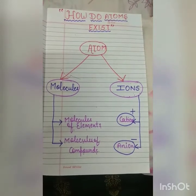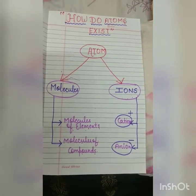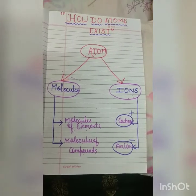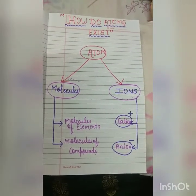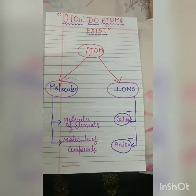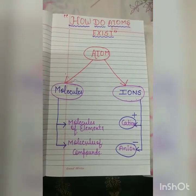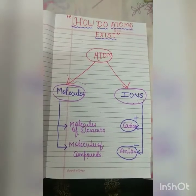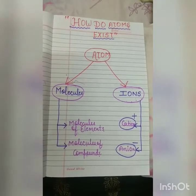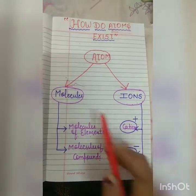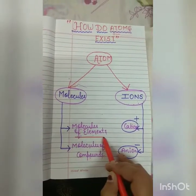When we talk about molecules, we know that molecules are formed when two or more than two elements combine together. On the basis of whether same elements or different elements combine together, we are having two types of molecules. The very first, we are having molecules of elements.